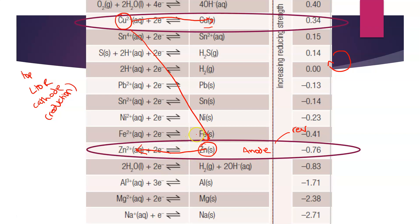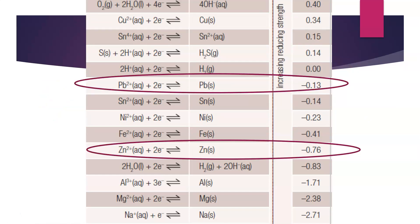The reaction will be spontaneous and suitable for a galvanic cell if we have a negative gradient going from left to right on the electrochemical series. For zinc and lead: Pb²⁺ is above zinc on the series, so Pb²⁺ is reduced to Pb(s) as the cathode reaction, and Zn(s) is oxidized to Zn²⁺ as the anode reaction. Lead would be the cathode and zinc would be the anode — our negative electrode and source of electrons.